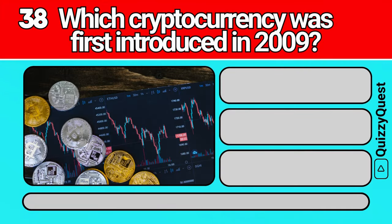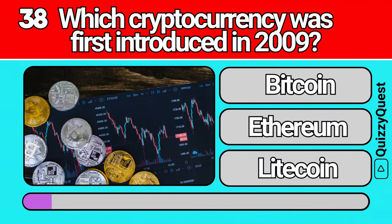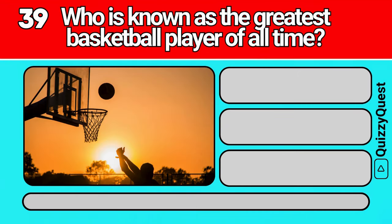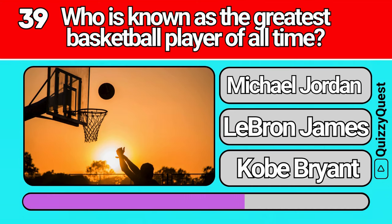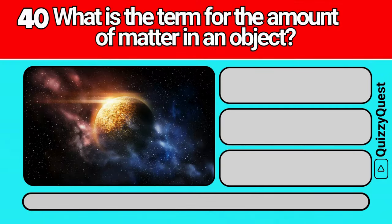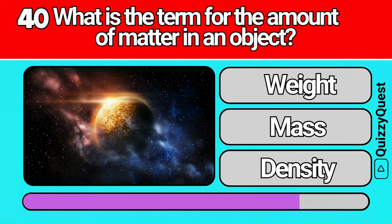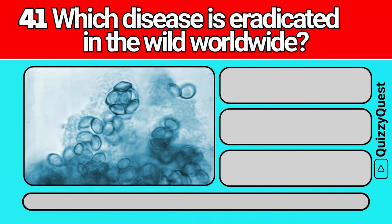What cryptocurrency was first introduced in 2009? Who is known as the greatest basketball player of all time? What is the term for the amount of matter in an object? What disease is eradicated in the wild worldwide?